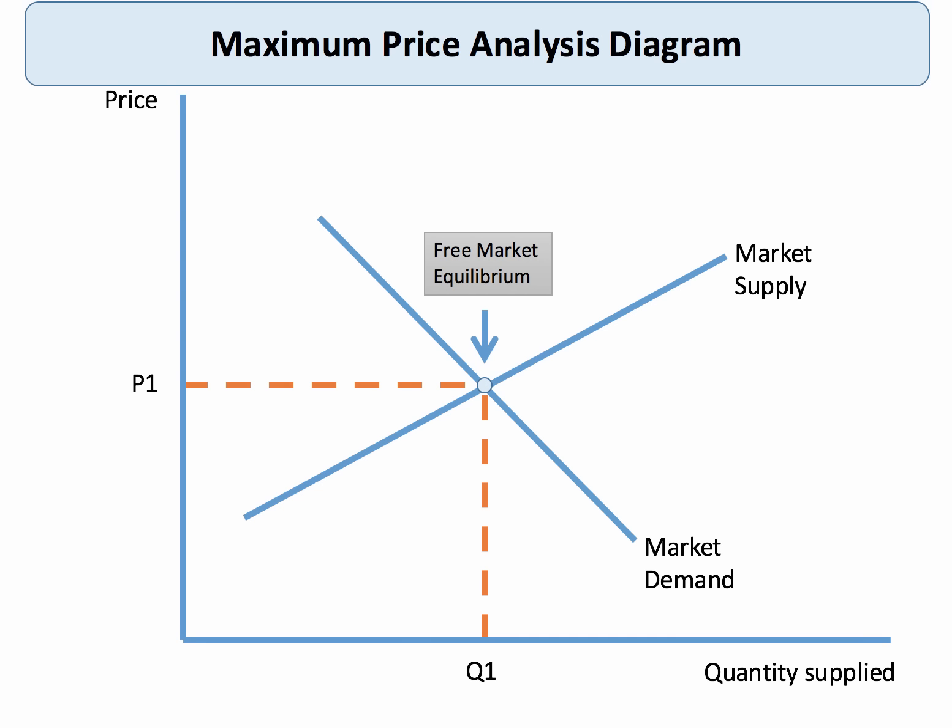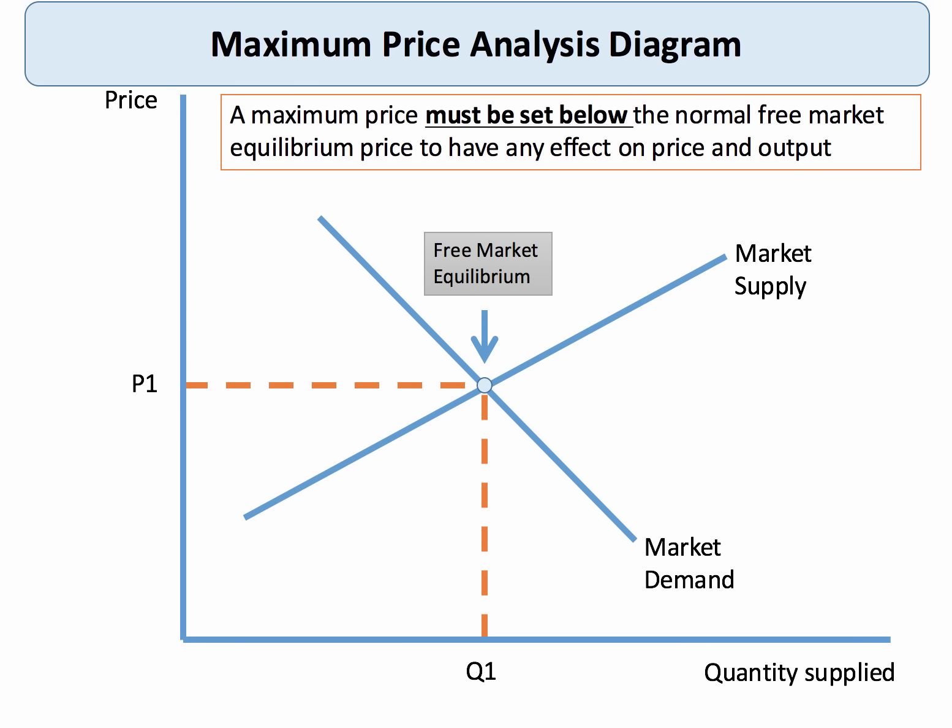What about the introduction of a maximum price into this market? A key revision point is that a maximum price must be set below the normal free market equilibrium if it's going to have any effect — in our example that's P1 and Q1. So I'm going to put in a maximum price now — there's my price ceiling set below P1, a little distance below the equilibrium.